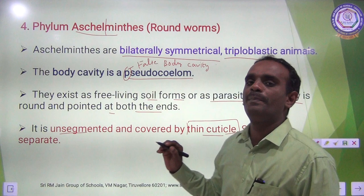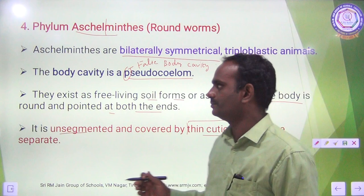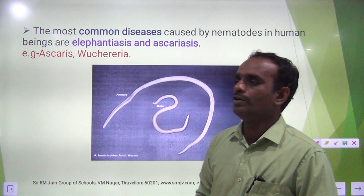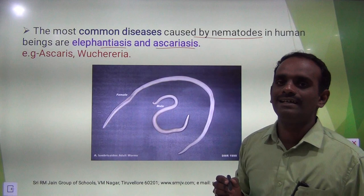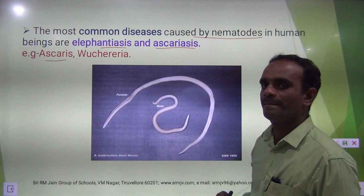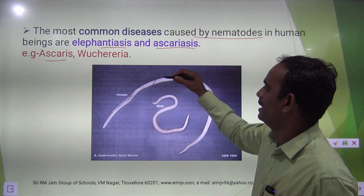Sexes are separate — meaning male and female animals are distinct individuals. The most common diseases caused by nematodes in humans are elephantiasis and ascariasis. The example organism is Ascaris. This is a roundworm with distinct adult female and male worms.